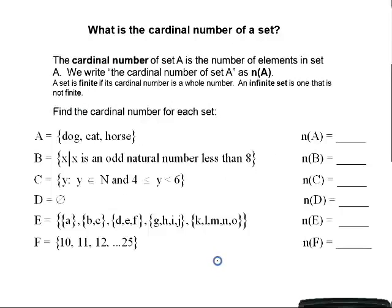The next slide asks: what is the cardinal number of a set? The cardinal number of a set is the number of elements in that set. Rather than writing out 'the cardinal number of set A,' we use an abbreviation. A set is finite if its cardinal number is a whole number; an infinite set is one that is not finite.